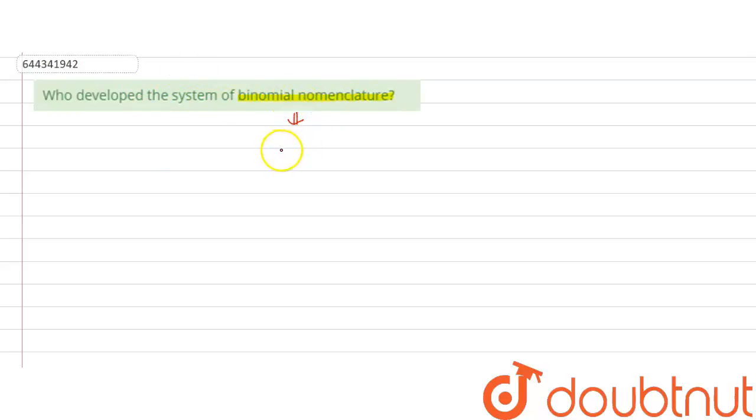So firstly we have to know that what is binomial nomenclature? Basically, if we can say that it is a system of naming organism. If we want to name a particular organism, we have to do it according to this nomenclature.